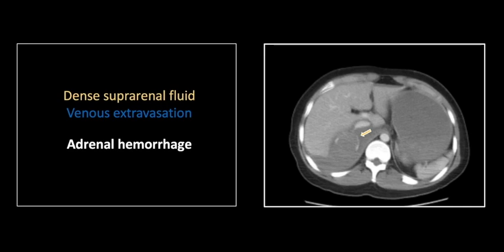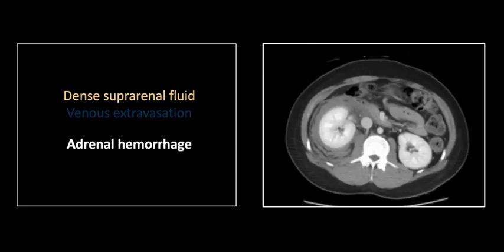You see here a thin rim of leaking contrast material outlining a slightly hyperdense, ill-defined suprarenal mass. There is also a small focus of venous extravasation. The right adrenal gland venous drainage is through small branches that flow into the right inferior phrenic or right renal vein. This most likely is a branch leading to the inferior phrenic or even the inferior phrenic itself. That hyperdense fluid extends down around the kidney, which certainly makes sense given that the right adrenal gland and right kidney both reside within the right perinephric fascia.